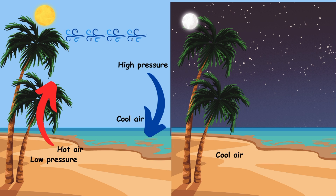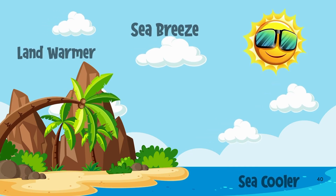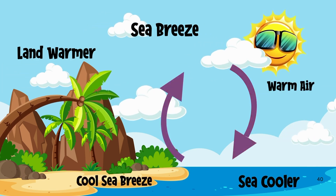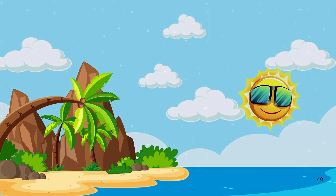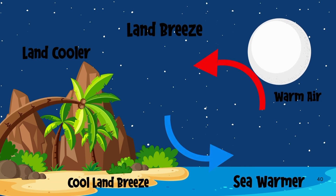This situation becomes completely opposite during the night time. The land cools down quickly compared to the sea, so the air above the land cools down and creates high pressure on the land, whereas sea water takes longer to cool down. Thus the air above the sea is hot and rises up, creating low pressure, and the wind flows from land to sea at night — this type of breeze is known as the land breeze. In summary, during the daytime sea breeze flows from sea to land due to warmer land and cooler sea, whereas at night land breeze flows from land to sea due to cooler land and warmer sea.